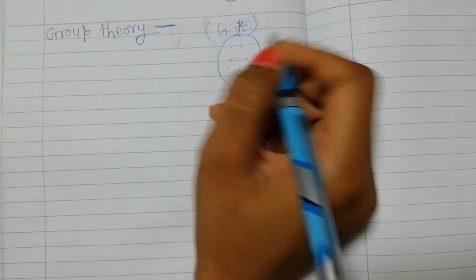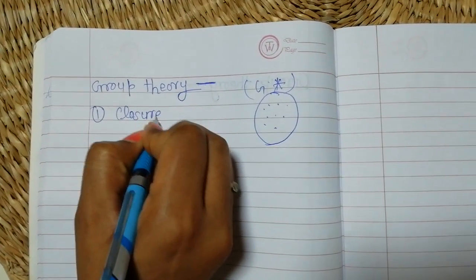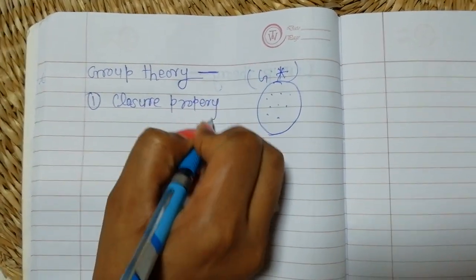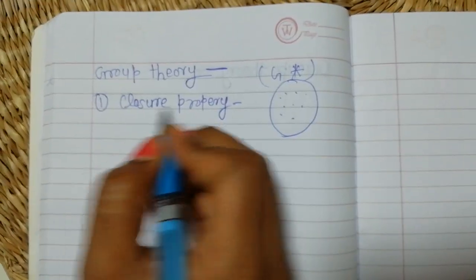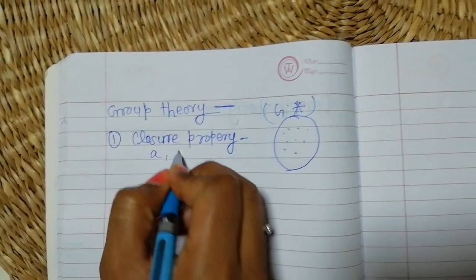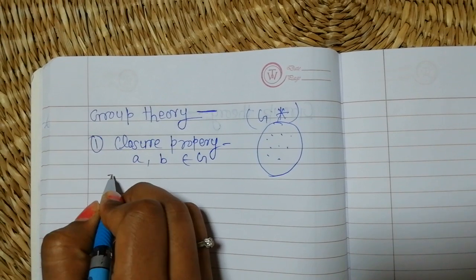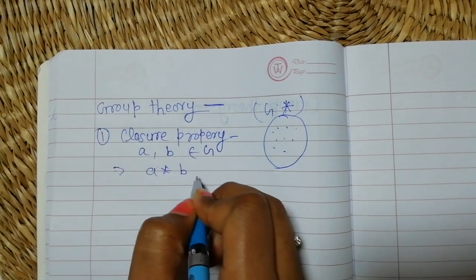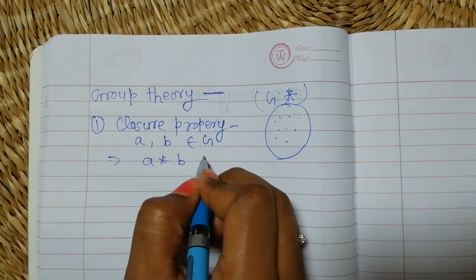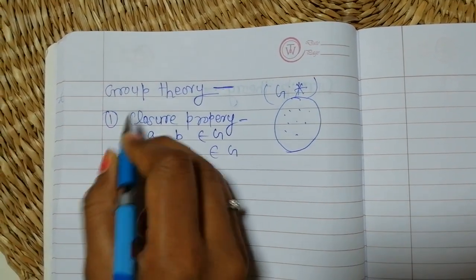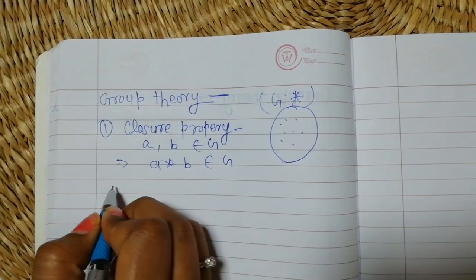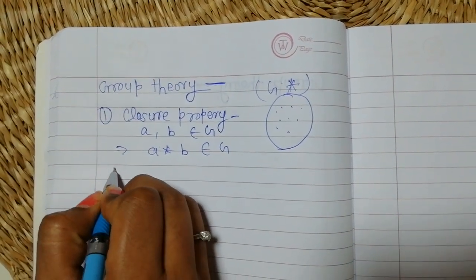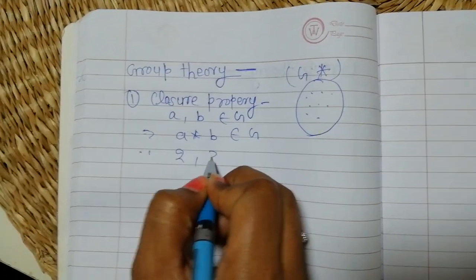Let's start. The first property is closure property. We take two elements from that group, like a and b belonging to G, and we apply the operation a star b. If this operation also belongs to that group, then it is called a closure property.